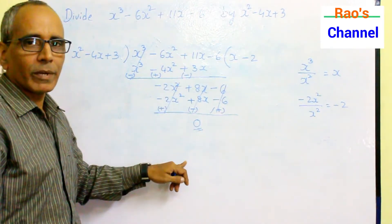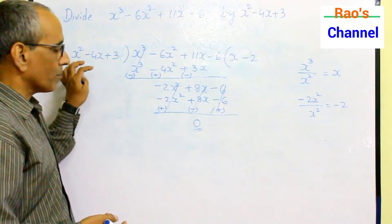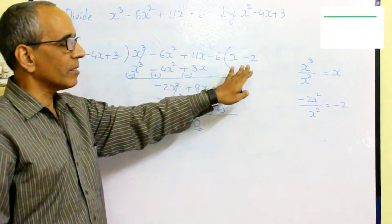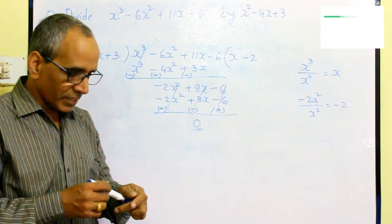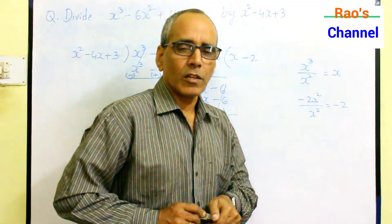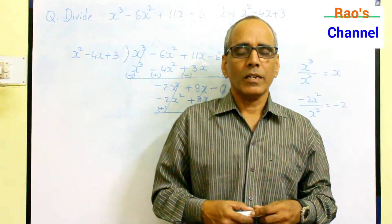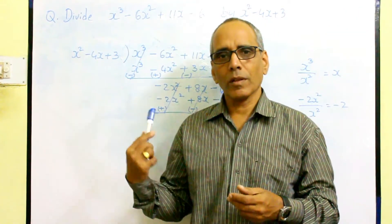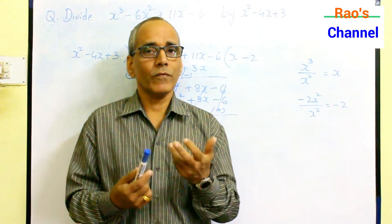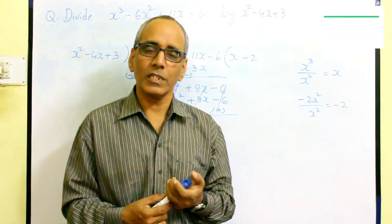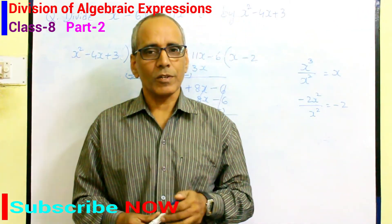For verification, multiply the trinomial by the binomial quotient and you will get the dividend part. Division of a polynomial by a binomial, trinomial, or anything is not a difficult task — very simple. In our next video, we solve more of the same kind and another type of division. We also use factorization in some cases, which we will solve in our next videos. Thank you for watching.